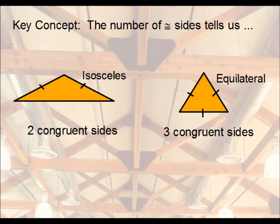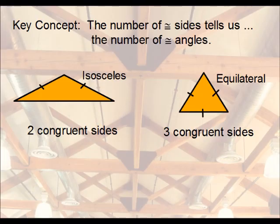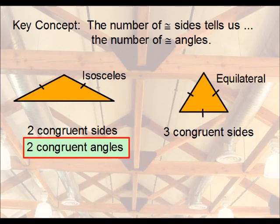The key concept here is the number of congruent sides. The number of congruent sides will always tell us how many congruent angles we have. So for an isosceles triangle, if you have two congruent sides, that also means you have two congruent angles. Whereas for an equilateral triangle, three congruent sides means that all three angles are congruent.